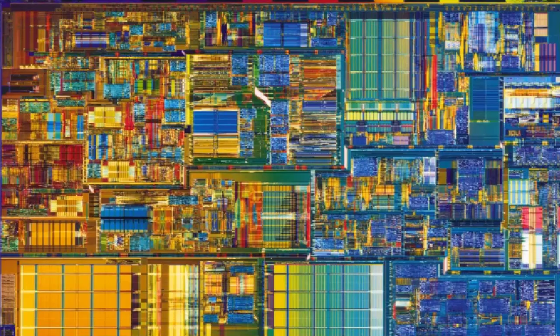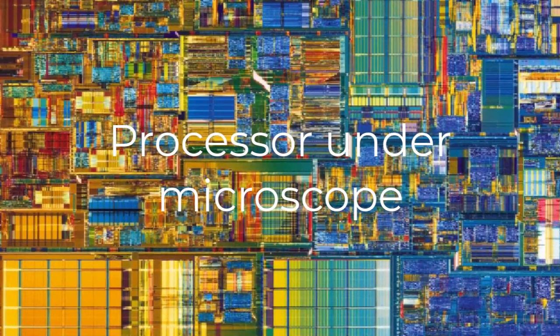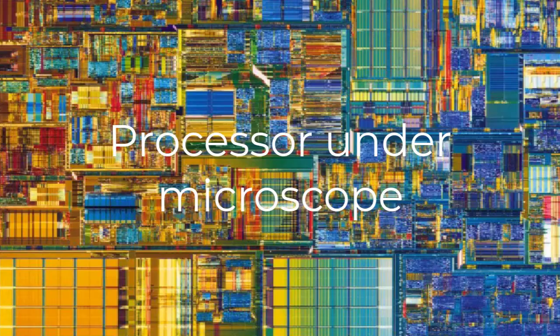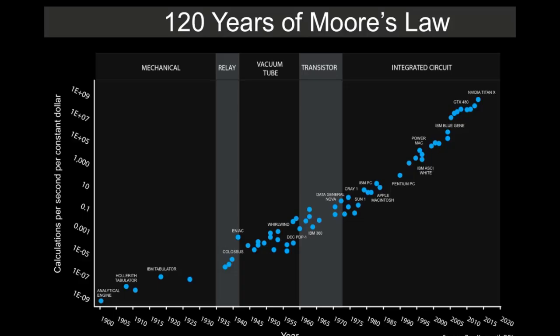Why? Because transistors are so small, they're approaching the size of atoms. At that point, you get leakage. You don't know where the electron is anymore because of the quantum principle, and everything collapses. This curve is now flattening out.